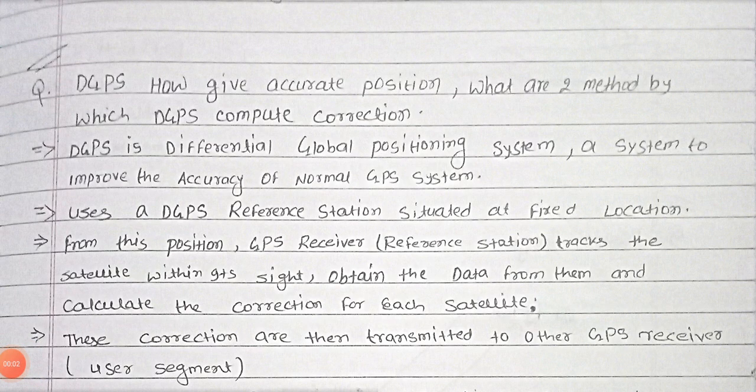This video is all about DGPS, Differential Global Positioning System. How DGPS gives accurate position and what are the two methods by which DGPS computes correction. DGPS is a system to improve the accuracy of normal GPS systems.